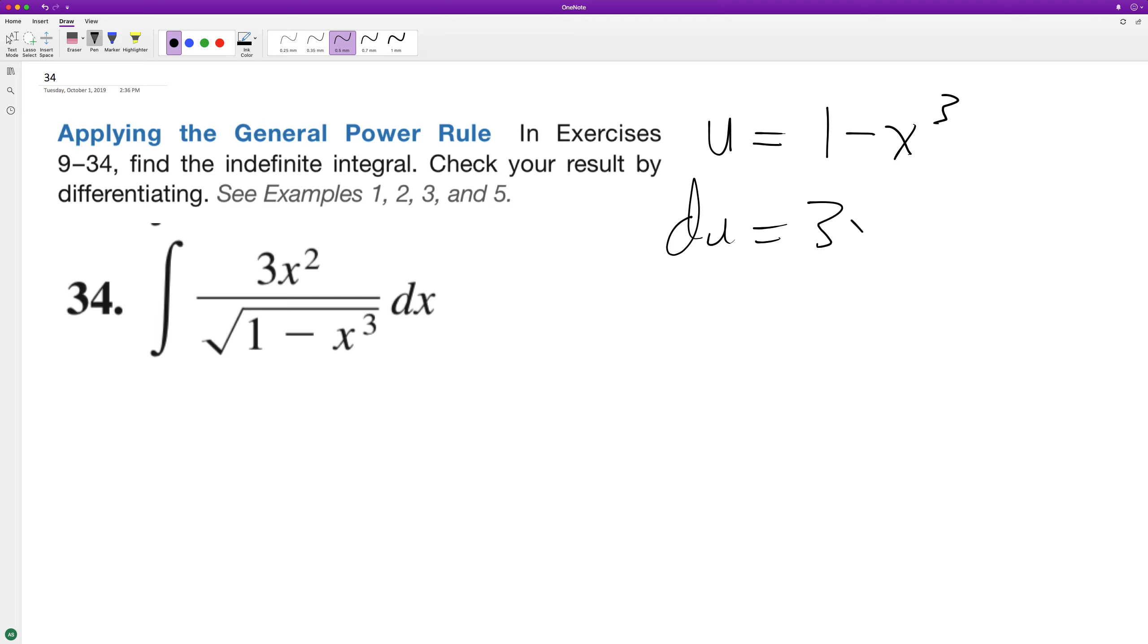Du equal to 3x, excuse me, negative 3x squared. And all we have to do to get negative 1 du equal to dx is we need to multiply by negative 1, so negative 1 du is equal to dx.